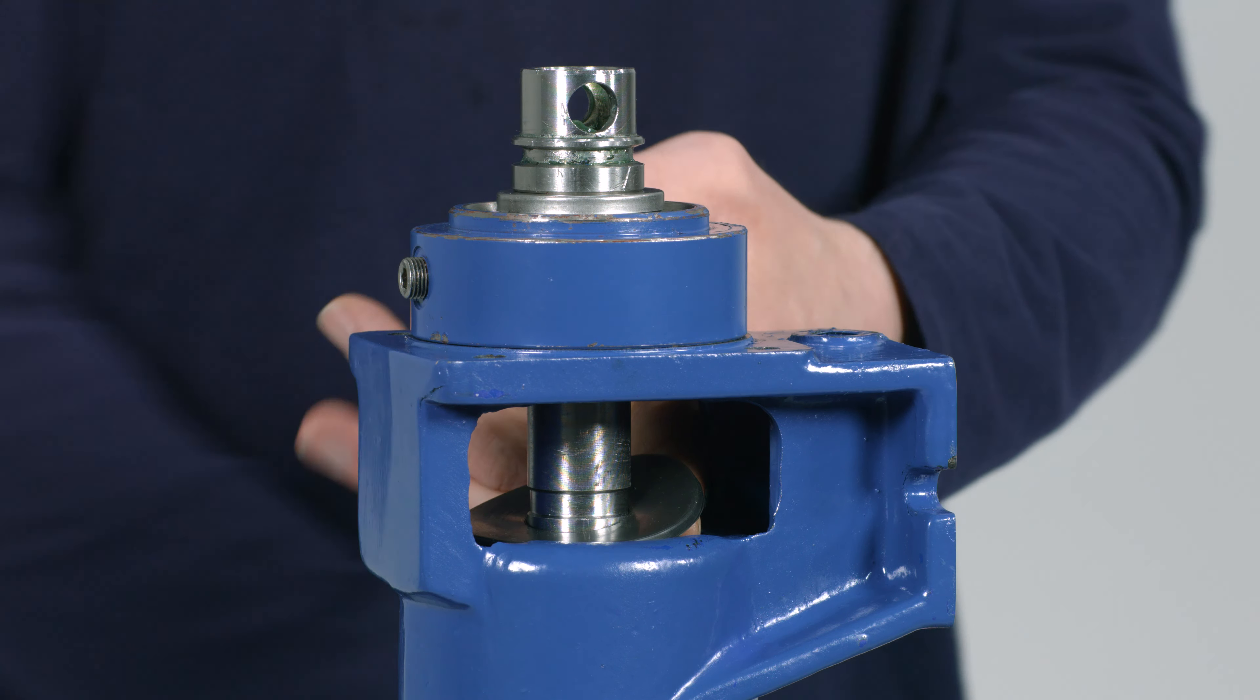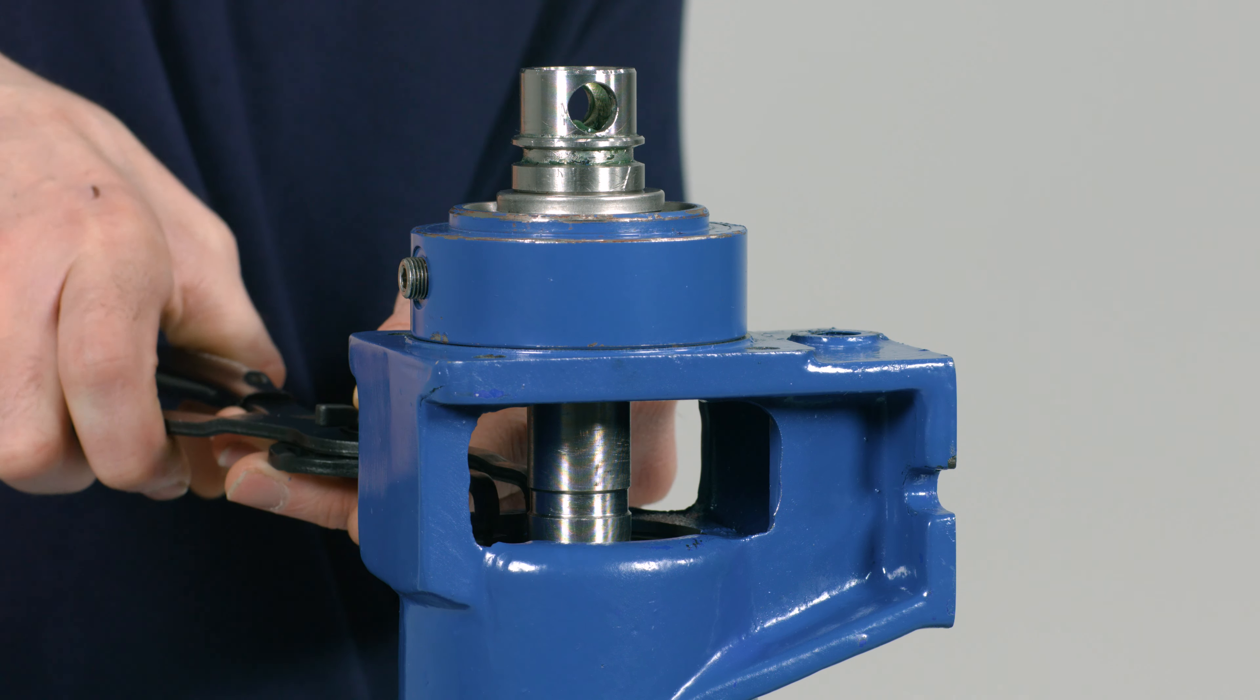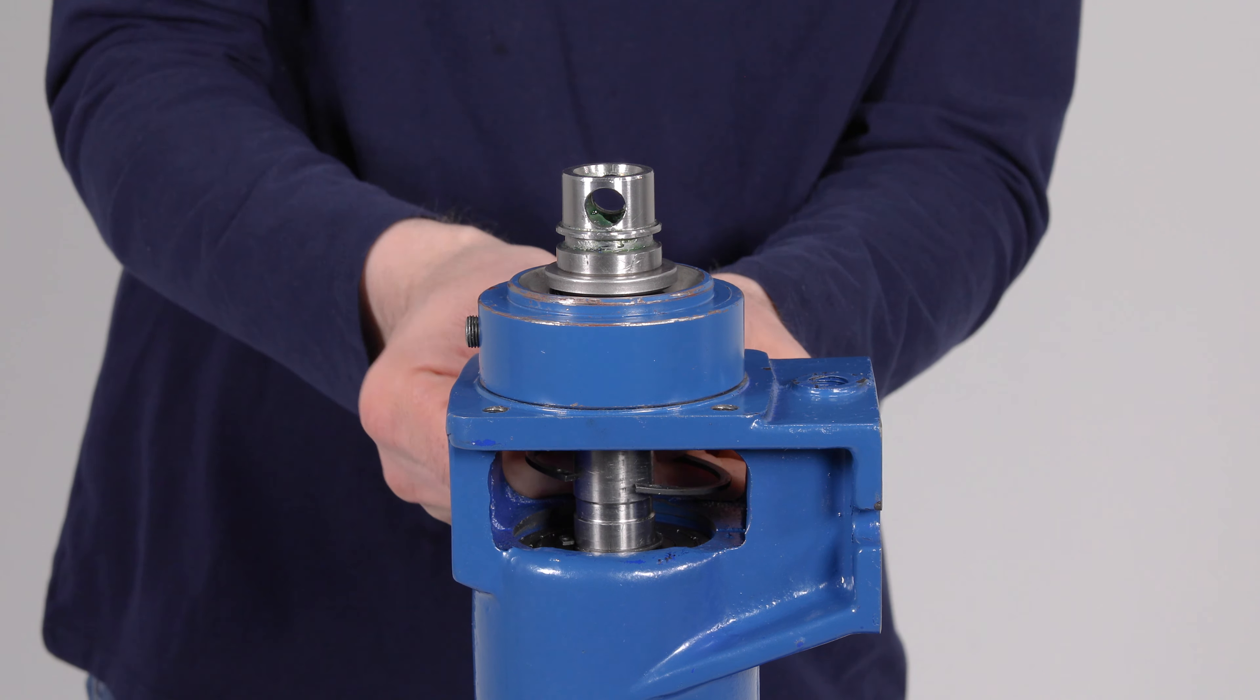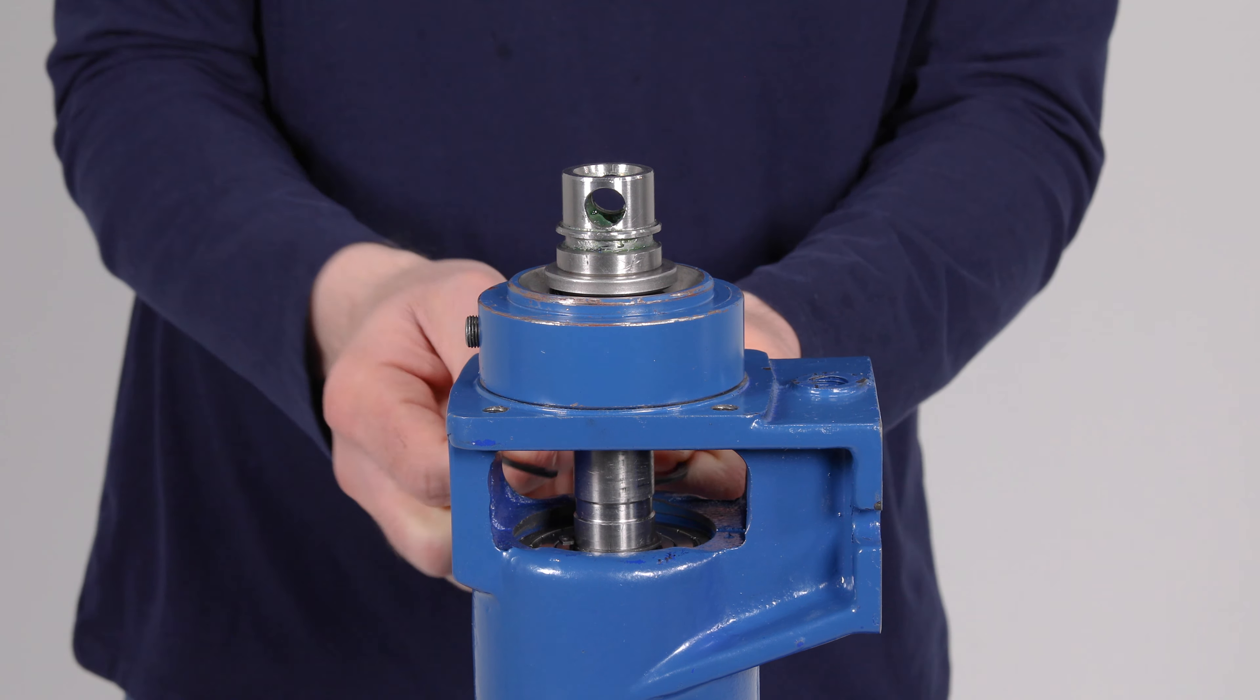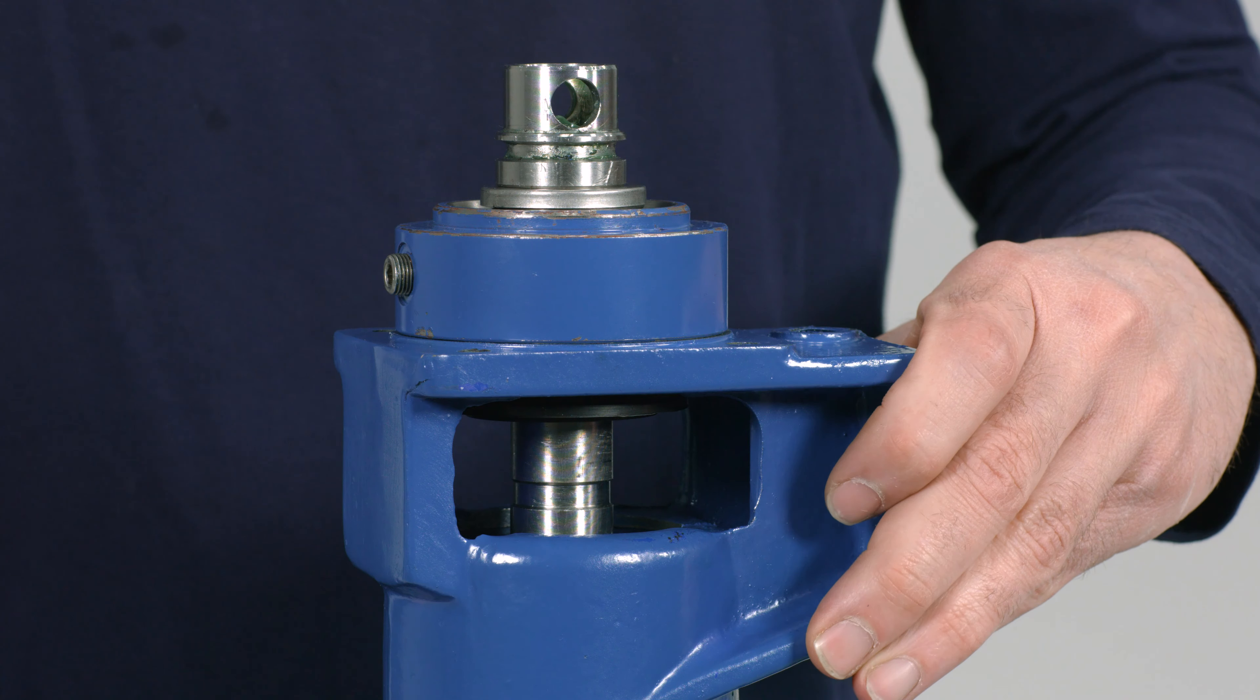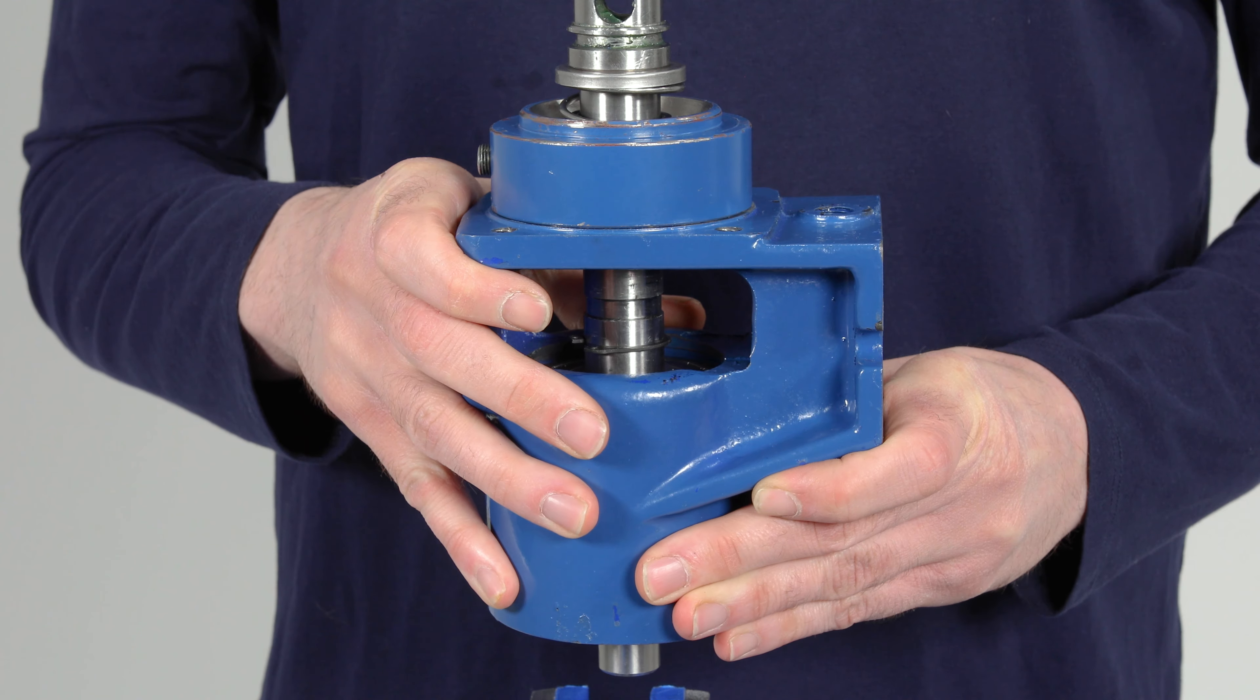Slide the flinger ring up against the top bearing. Using a pair of snap ring pliers, remove the snap ring from inside the bearing housing. Place the bearing housing in a press with the keyway facing up. Press the drive shaft until the bearing and spacer come loose from the bearing housing. Remove the bearing housing and drive shaft from the press and place on a workbench.